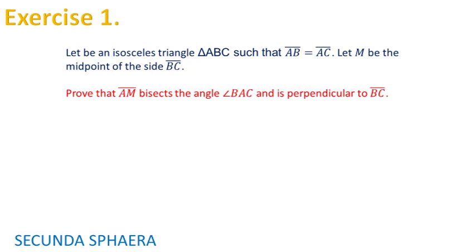The problem asks to prove that AM bisects the angle BAC and is perpendicular to the side BC. I'll give you some context for this problem.